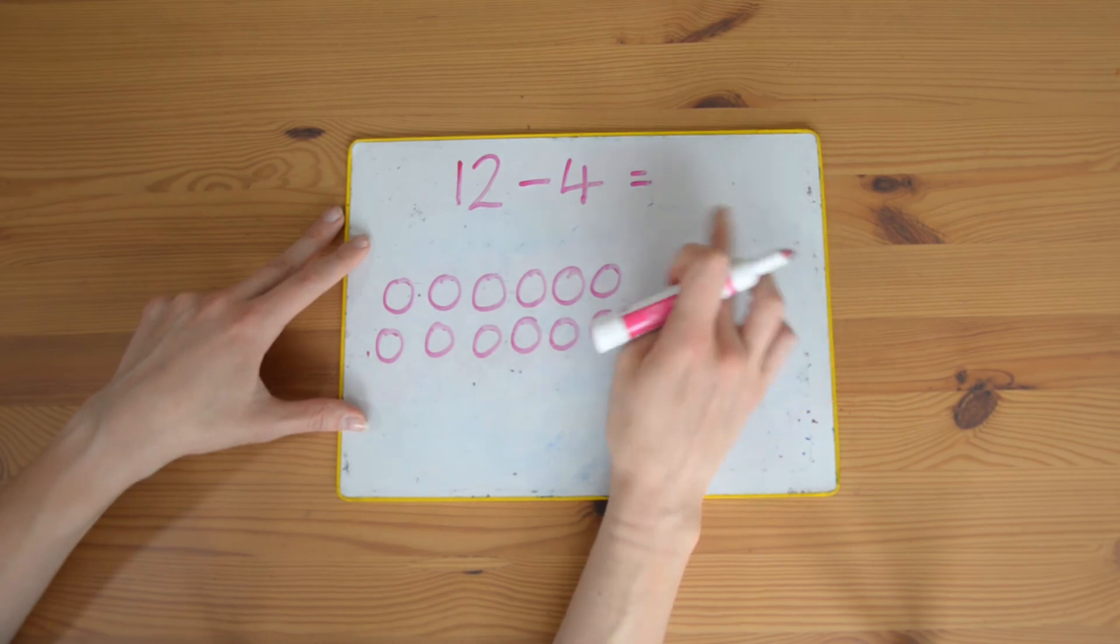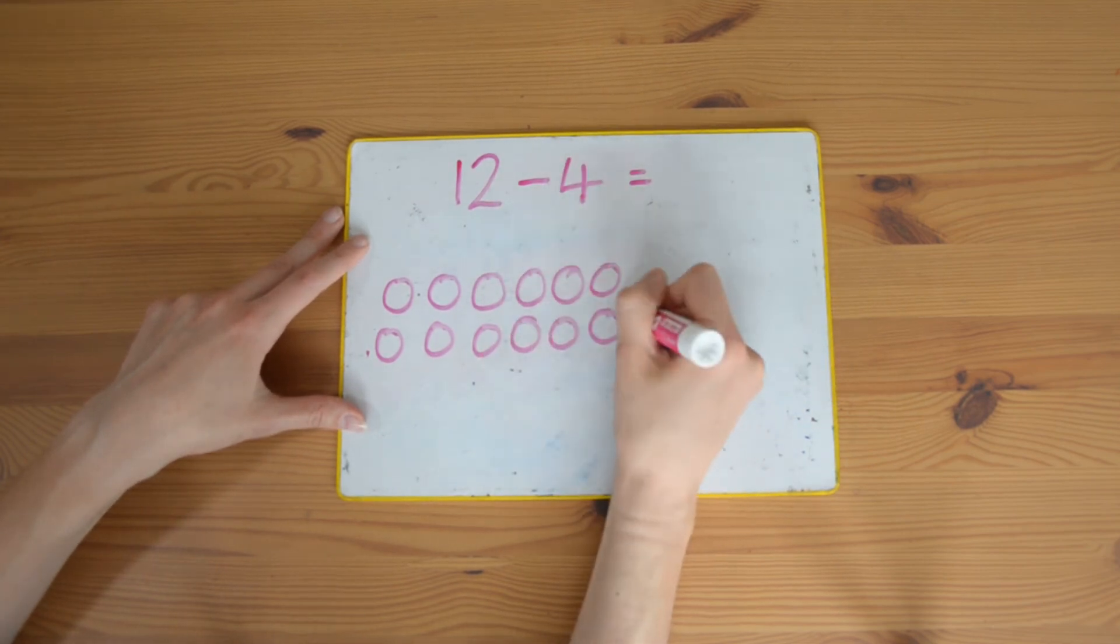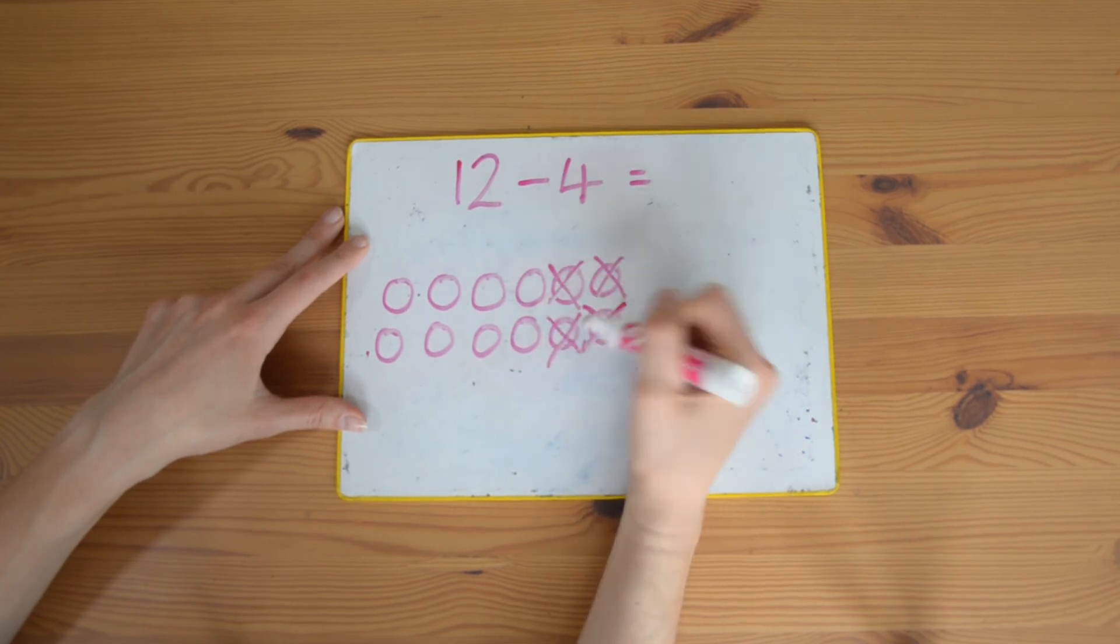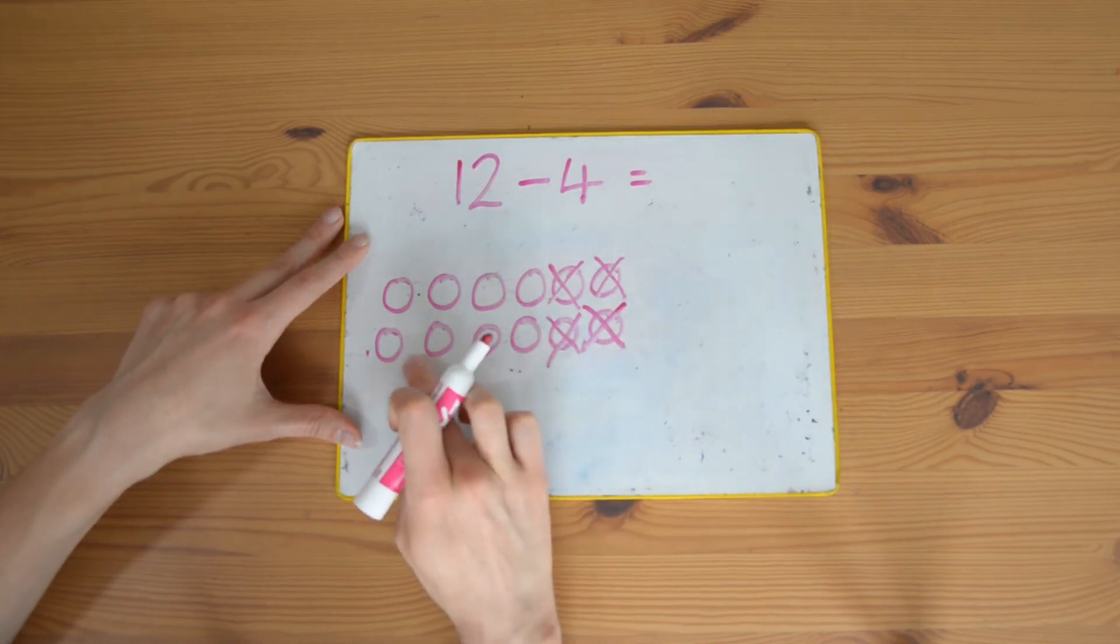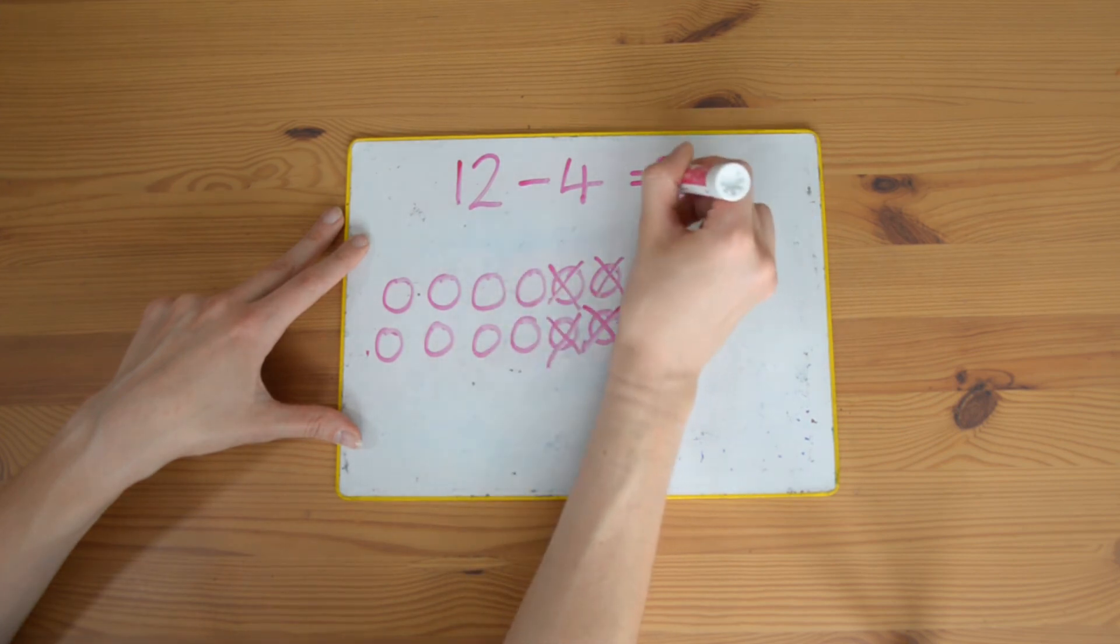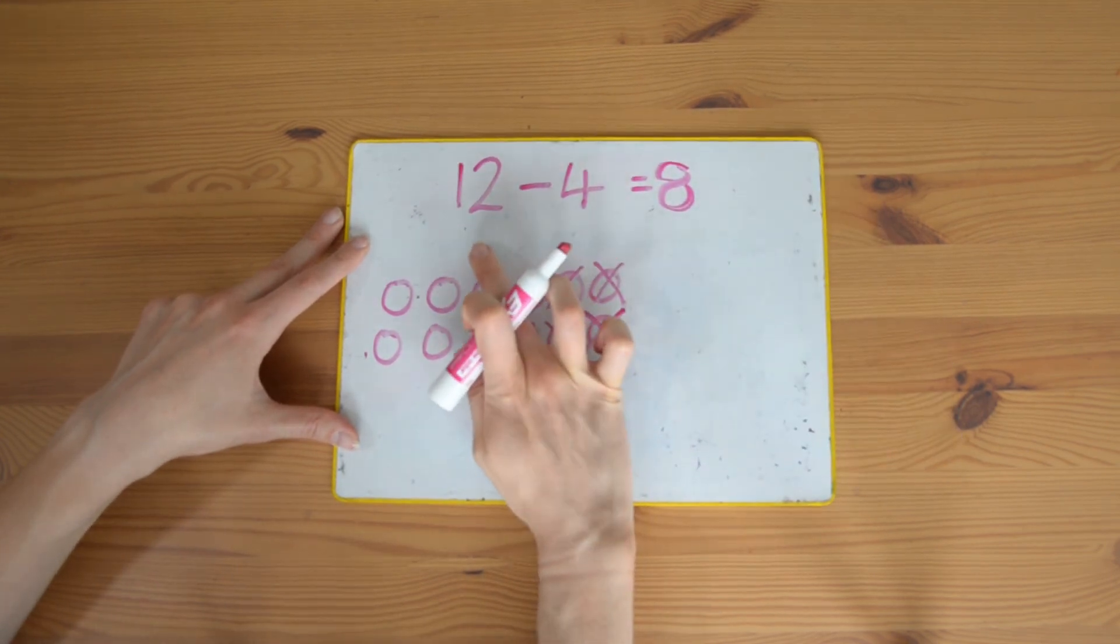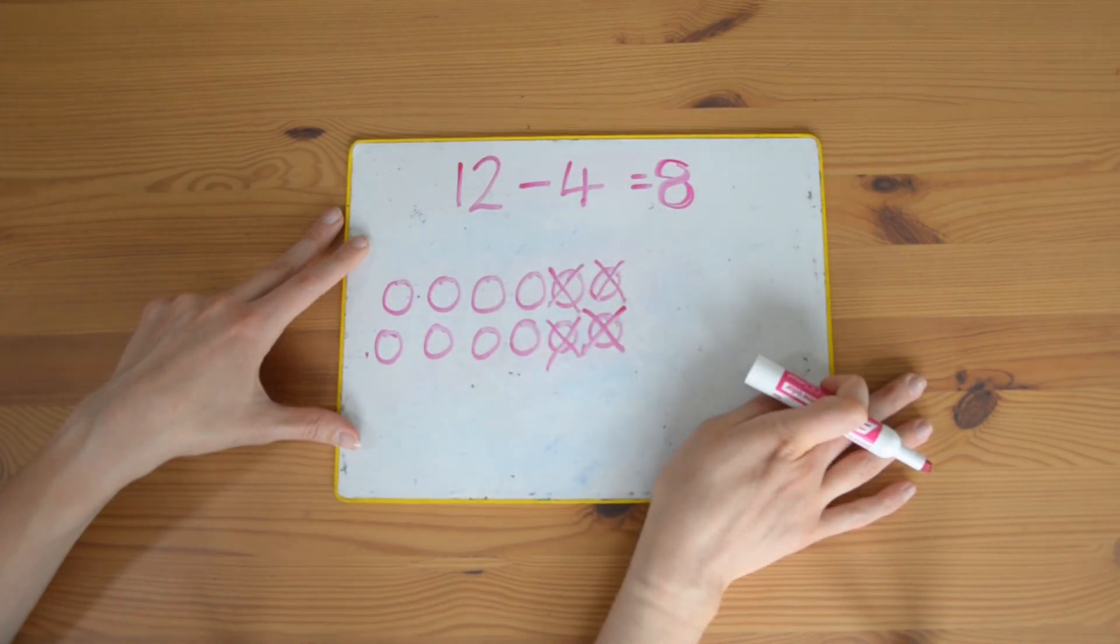How many am I taking away? Four: one, two, three, four. Now I need to check how many I have left: one, two, three, four, five, six, seven, eight. So eight is my answer. Twelve take away four equals eight. Great work.